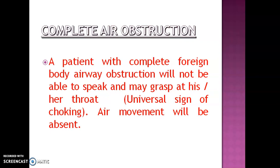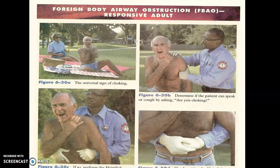In complete airway obstruction, a patient with complete foreign body airway obstruction will not be able to speak and may grasp at their throat with both hands. This is called the universal sign of choking. When choking occurs, the victim will make a high-pitched sound when inhaling, and both hands will be on the throat or neck. Air movement will be absent.